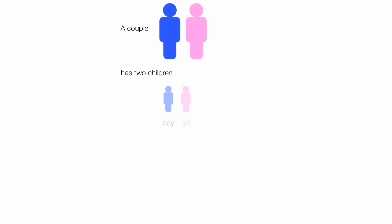A couple has two children. They can have a boy and a girl, a boy and a boy, a girl and a boy, or a girl and a girl.